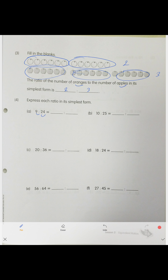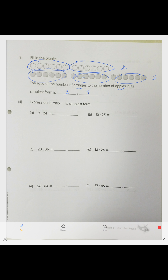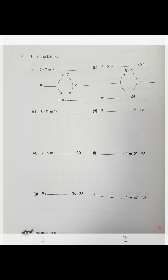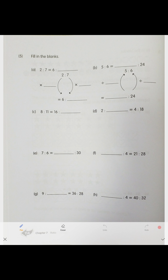For the next problem we simplify: 9 to 24 — divide both by 3 to get 3 to 8. Then 10 to 25 — find the common factor, which gives 2 to 5. I'll give you the remaining answers to check yourself: 7 to 8, then 3 to 5.